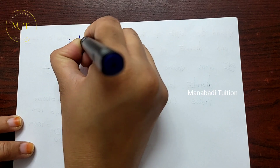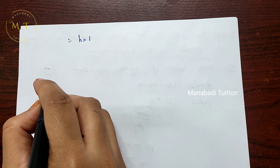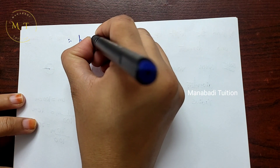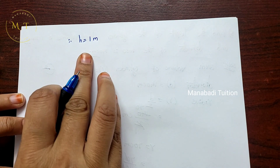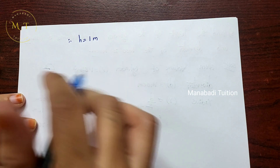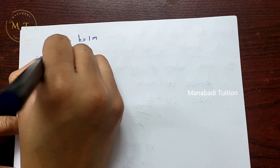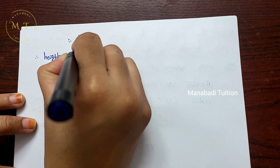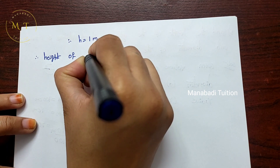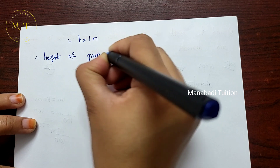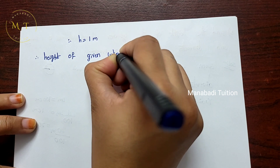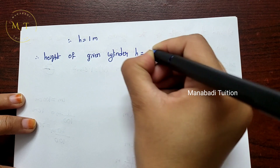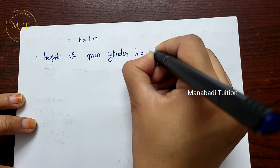Therefore, h = 1. Since h means height and we are working in meters, therefore the height of the given cylinder is h = 1 meter.